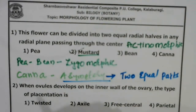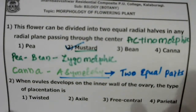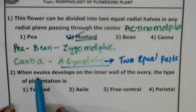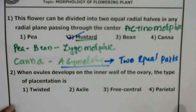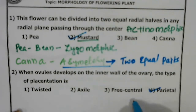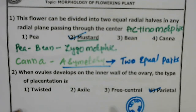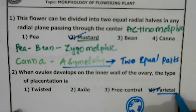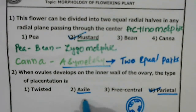The correct answer for the first question is mustard. The second question is: when ovules develop on the inner wall of the ovary, what type of placentation is it? Inner wall of the ovary means that is parietal placentation. Here the ovules develop on the inner wall.